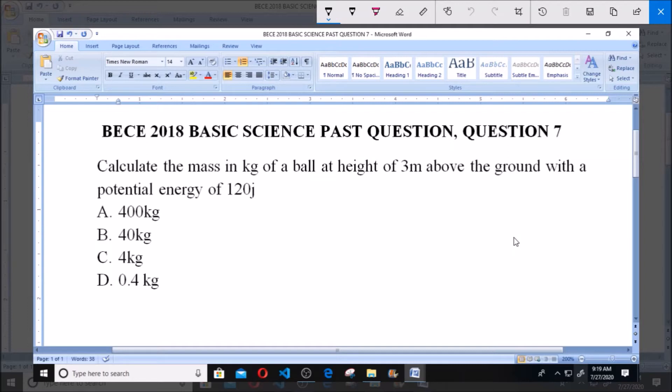A 400 kg, B 40 kg, C 4 kg and D 0.4 kg. So we have to calculate the mass. We have the height and we have the potential energy.